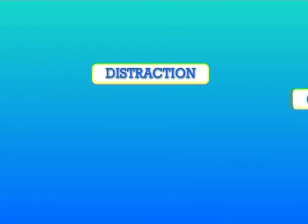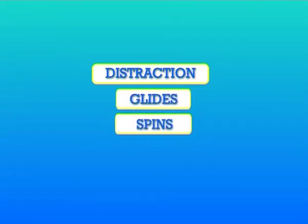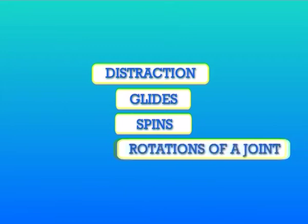Accessory motions are movements that cannot be performed actively but can be performed passively. Examples are distraction, glide, spins and rotation of the joints.